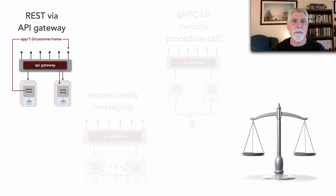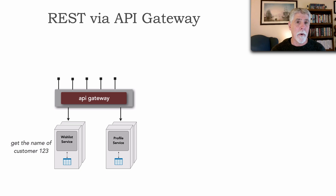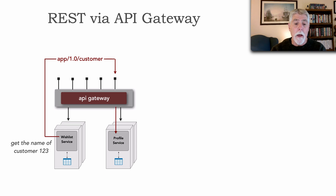Let's start with the classic REST communication via an API gateway. Because we have multiple instances of the profile service in microservices, the wish list needs some sort of load balancing capability. So it goes through the API gateway and typically invokes an endpoint like /api/v1.0/customer. The gateway invokes one of the healthy service instances, grabs the profile information, and sends all of that information back to the wish list.